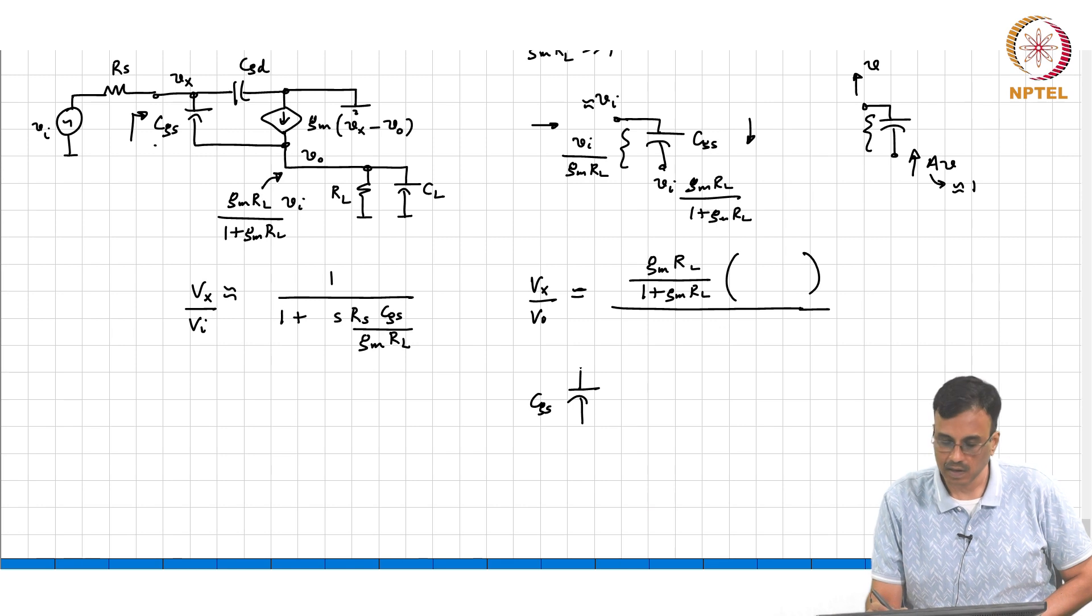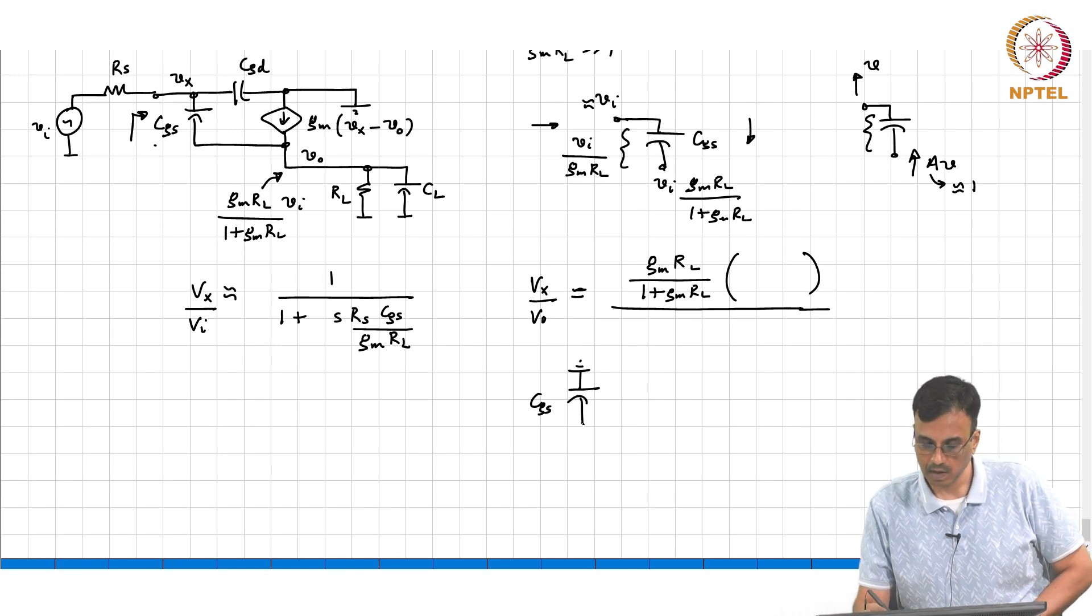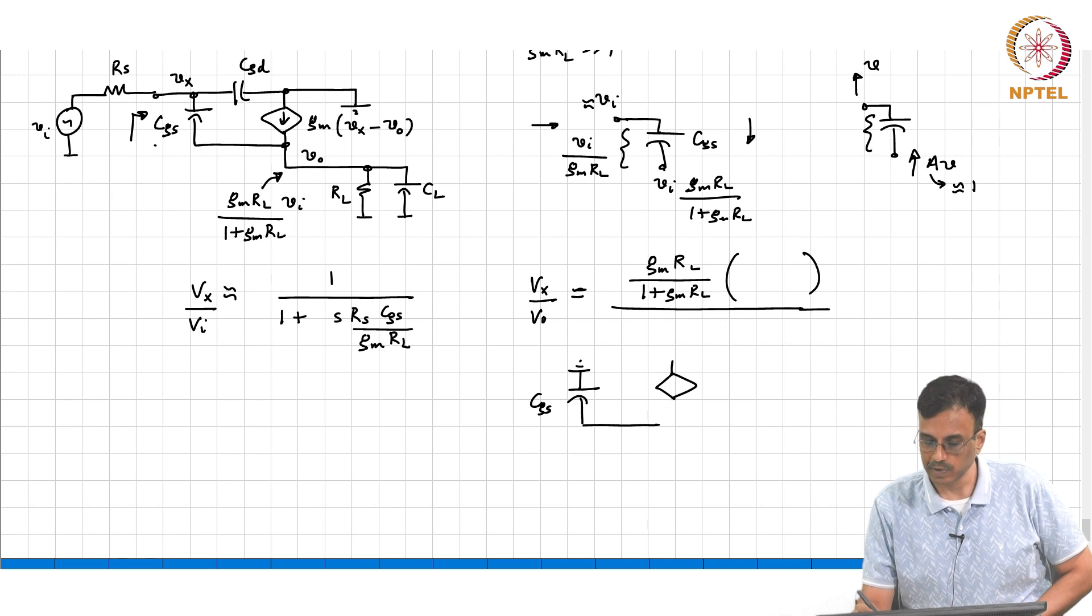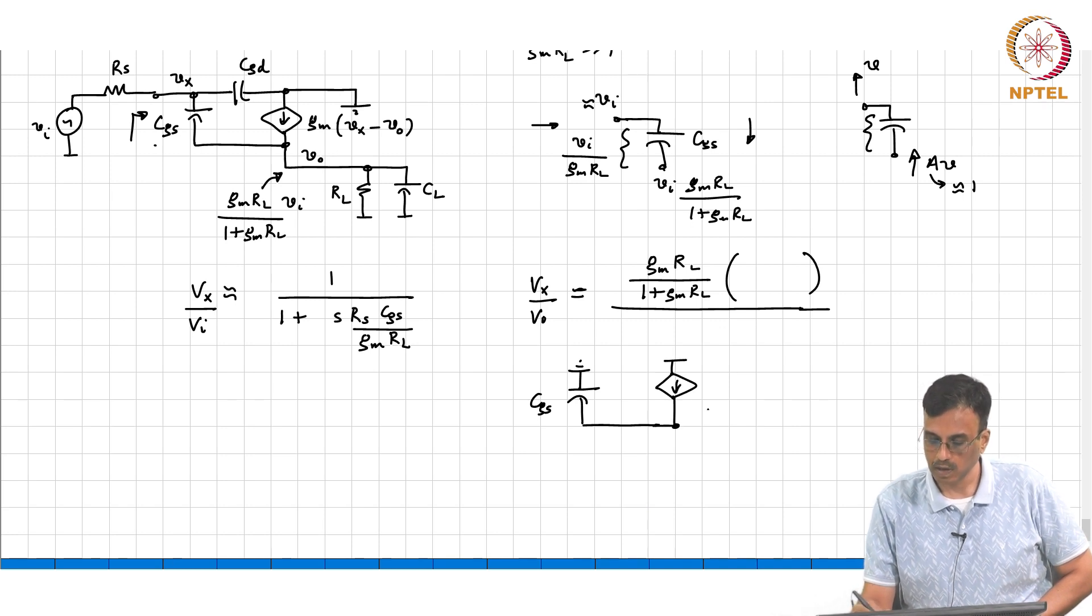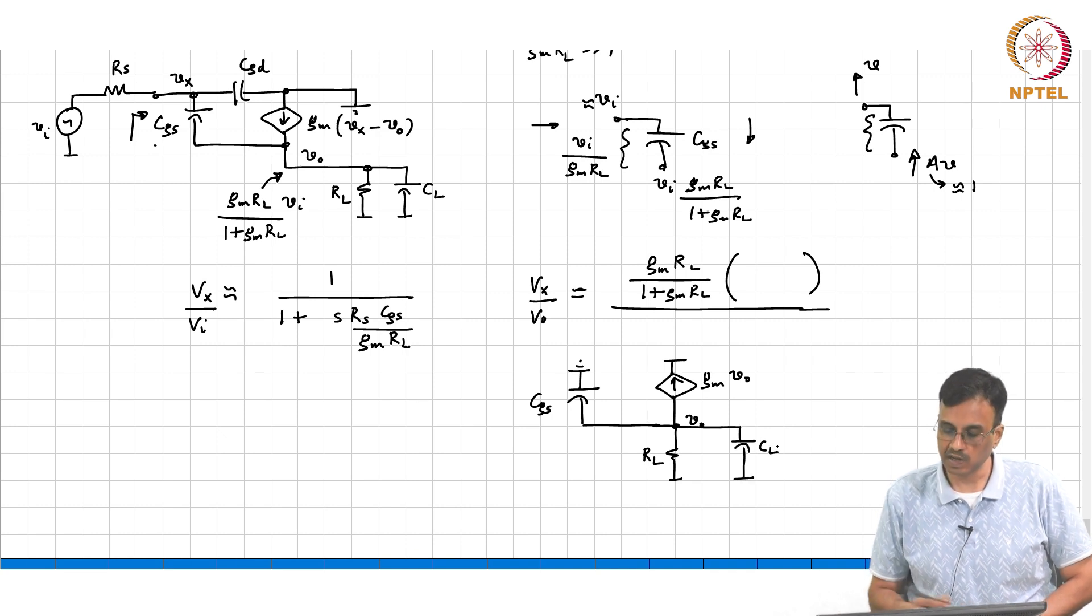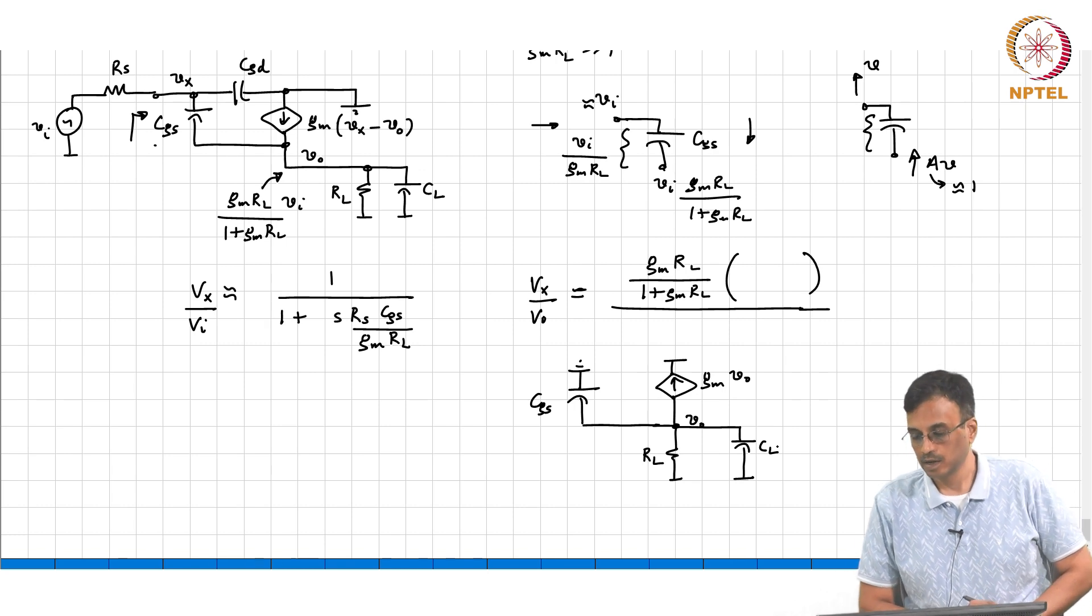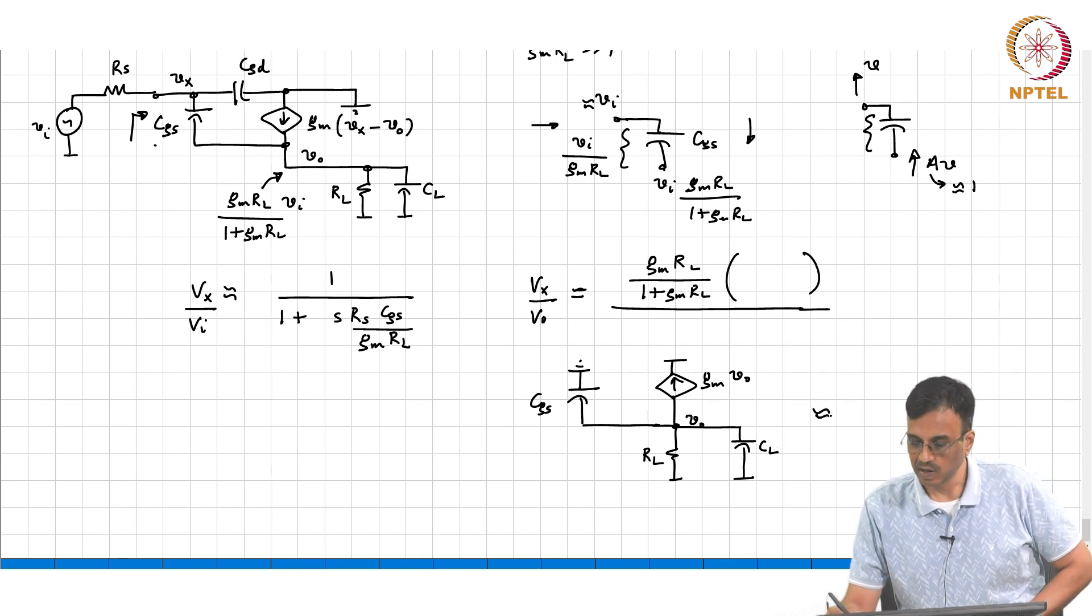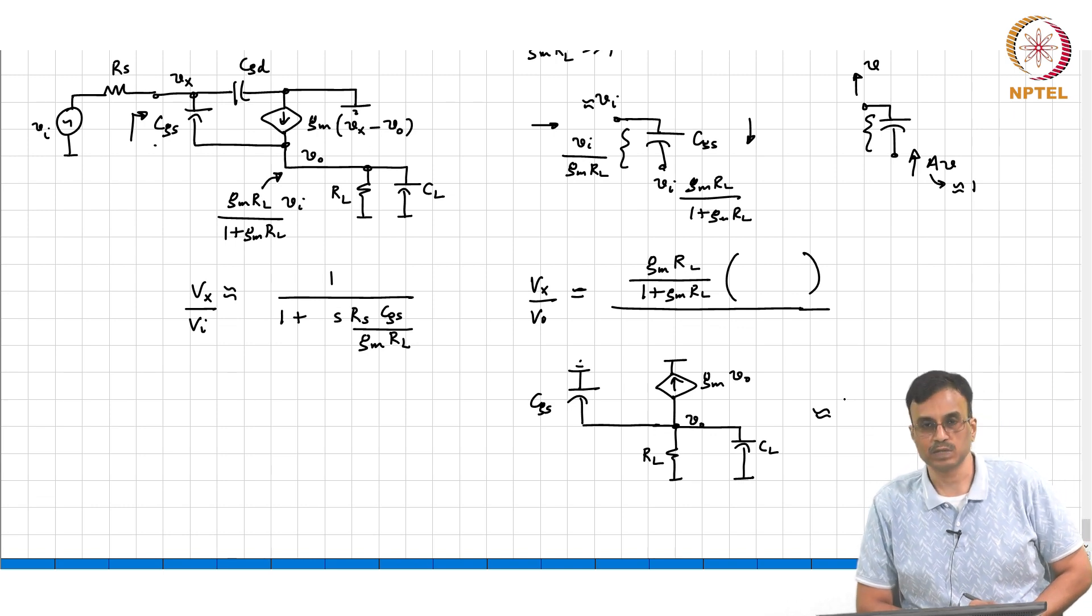This is CGS, that becomes 0. Then what happens to that current source? This becomes GM*V_naught. So what is the time constant associated with that node? Which is what? Is the time constant which is greater? 1 over GM*RL is much much larger than 1. So what is the time constant approximately?